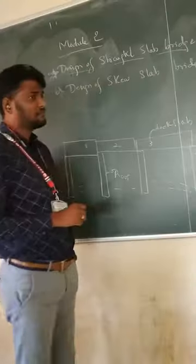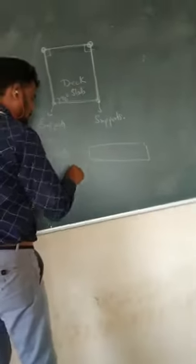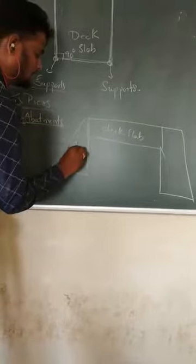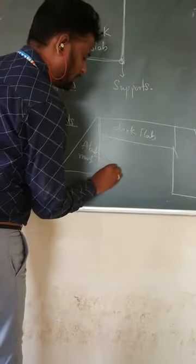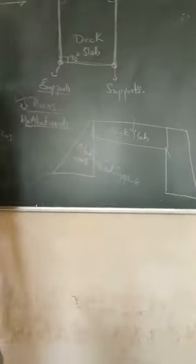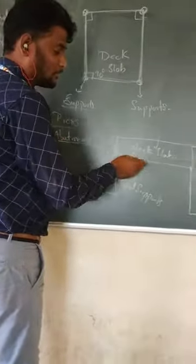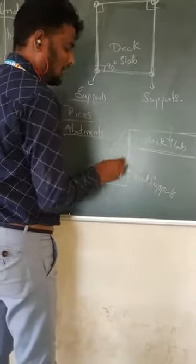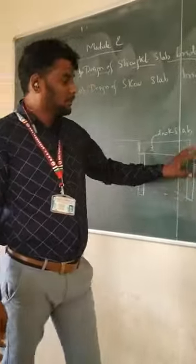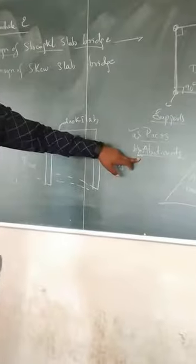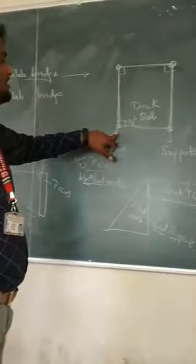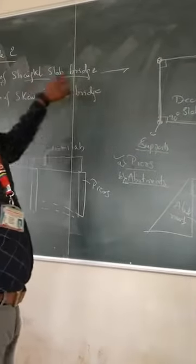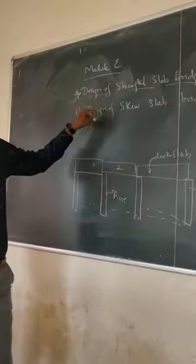Next we move to abutments. The abutments are the end supports on which the deck slab will rest. If you are constructing a bridge where the span is very short, we can rest the deck slab directly on abutments without any intermediate supports. So there are two types of supports: piers, which are intermediate supports, and abutments, which are end supports. A straight slab bridge means the deck slab rests on supports — that is, piers and abutments — that are perpendicular to the deck slab.